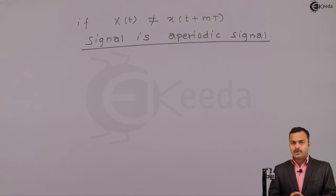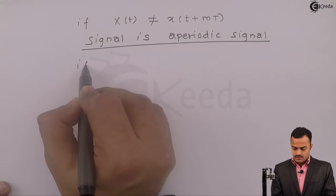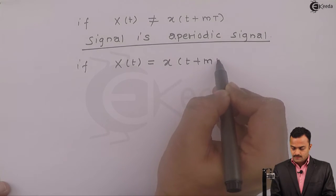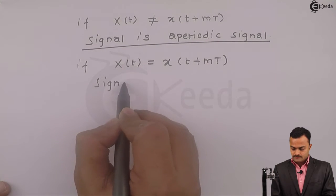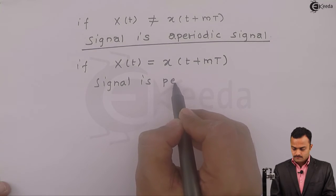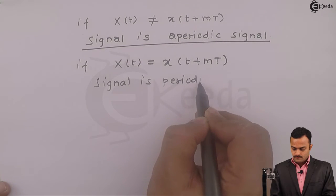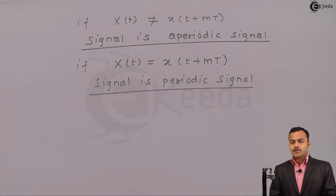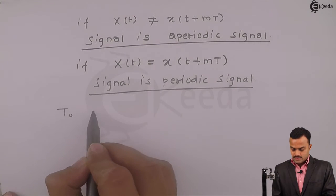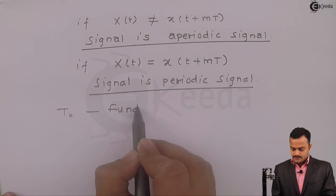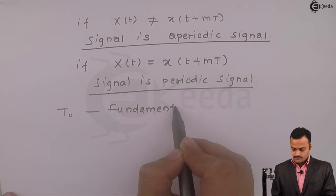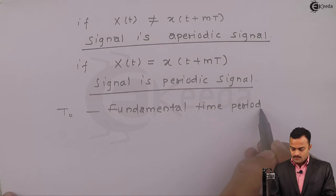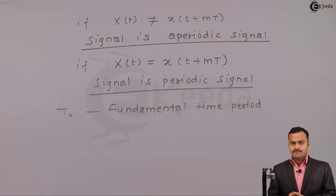Let's concentrate on periodic signal. So if x(t) equals x(t + mT), then the signal is periodic. Here we will introduce one term which we call T0, the fundamental time period.